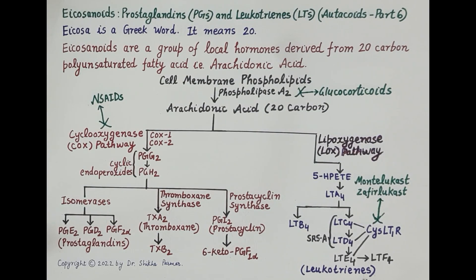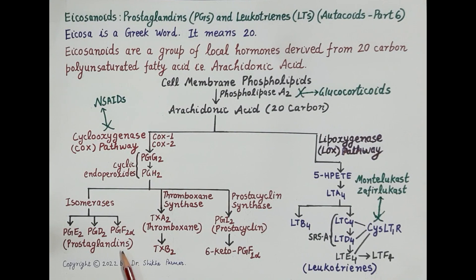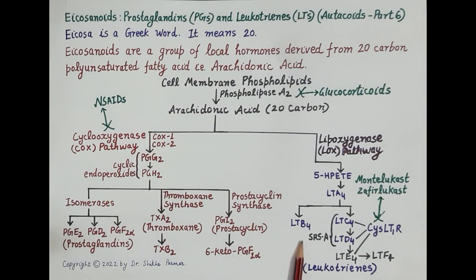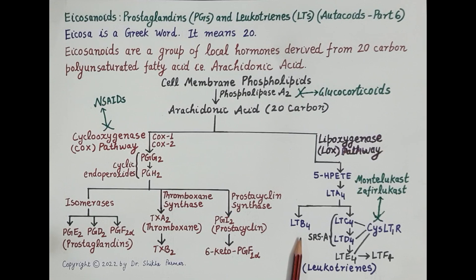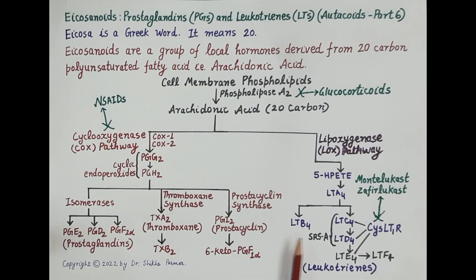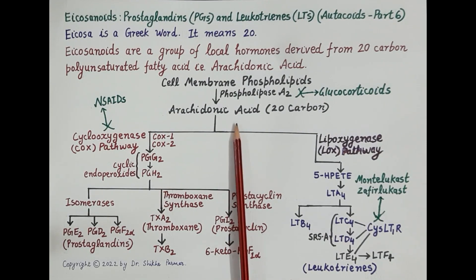Leukotrienes were so named as they were first derived from leukocytes and their structure consists of three conjugated double bonds. Most prostaglandins, thromboxane, prostacyclin, and leukotrienes have a half-life of a few seconds to a few minutes — a very short duration of action. Eicosanoids are not stored in body tissues; they are synthesized locally.